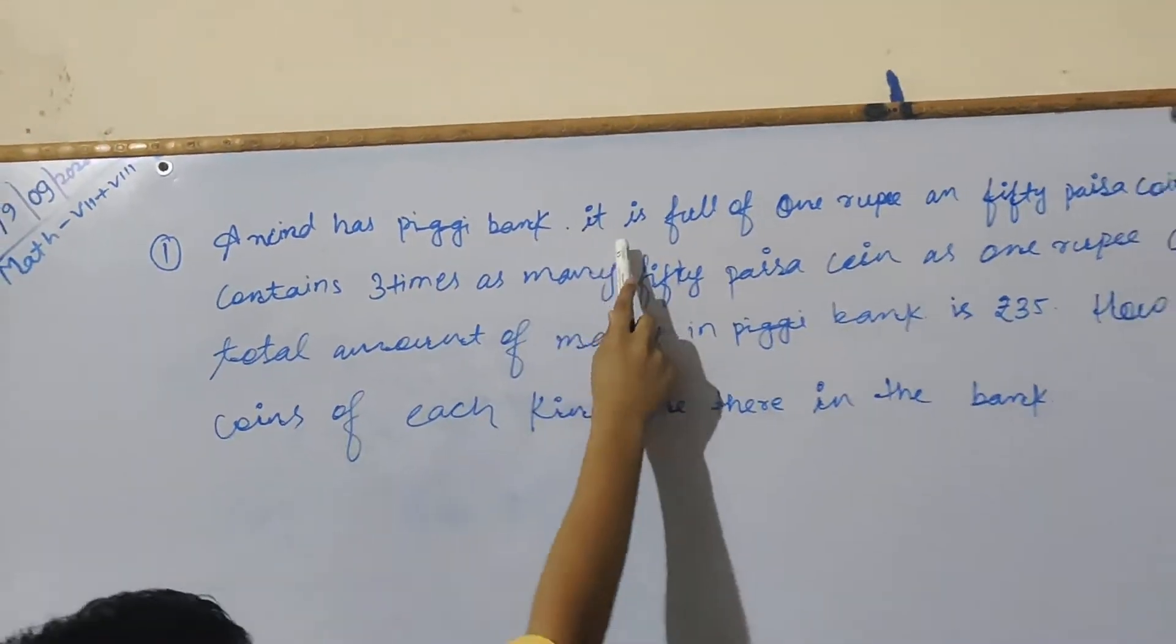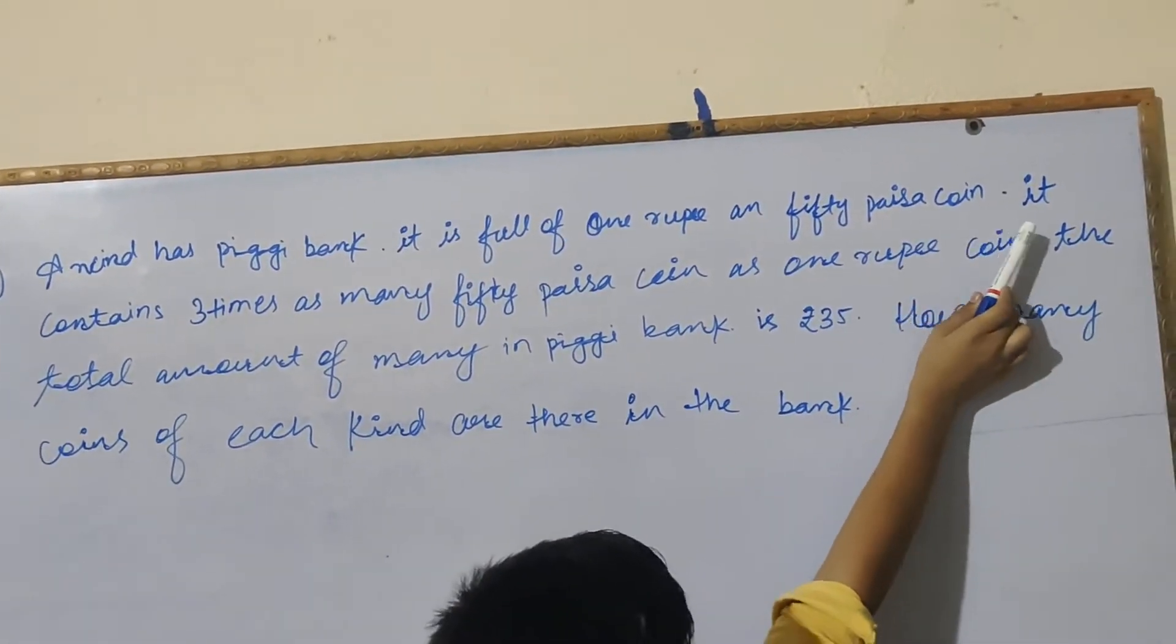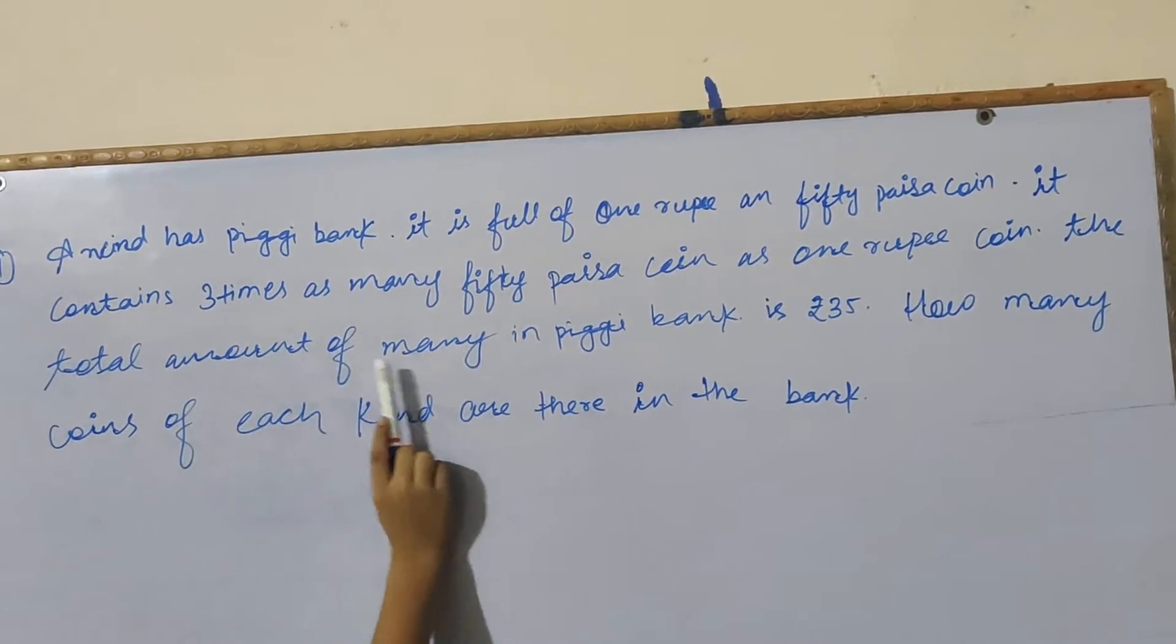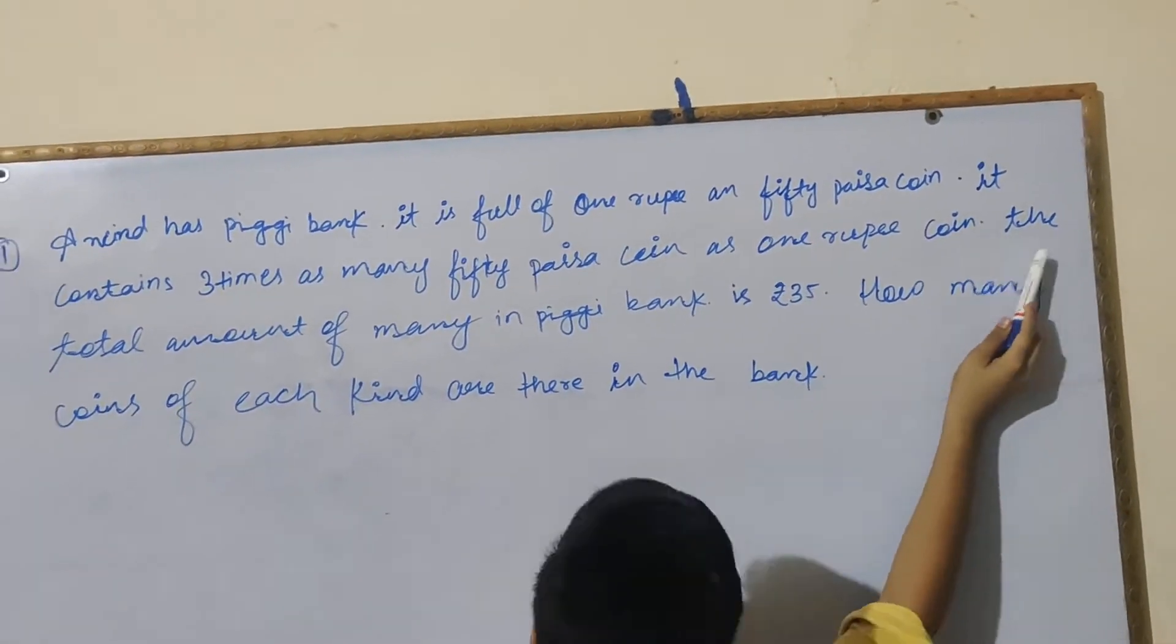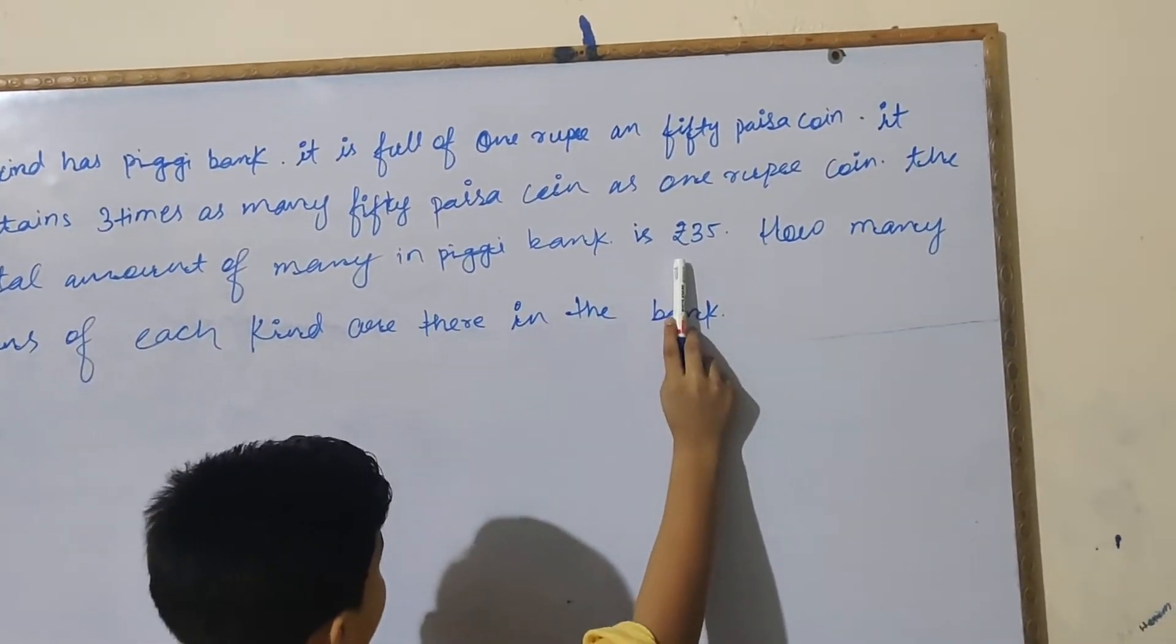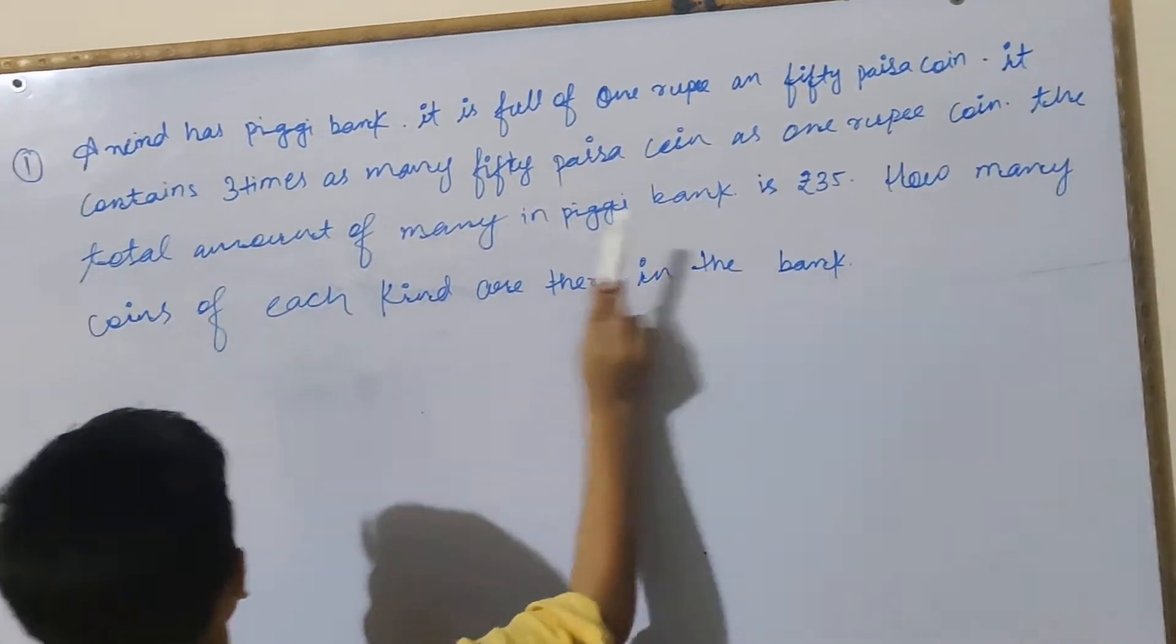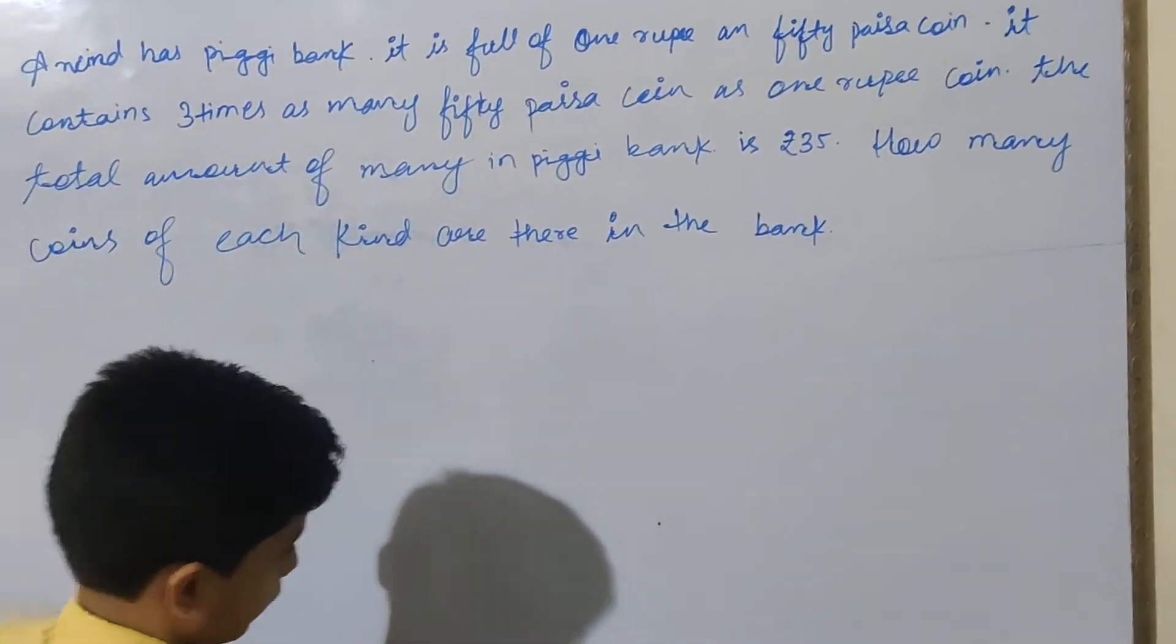First question: Arvind has a piggy bank, it is full of 1 rupee and 50 paisa coins. It contains 3 times as many 50 paisa coins as 1 rupee coins. The total amount of money in the piggy bank is Rs. 35.